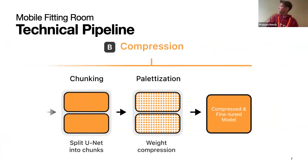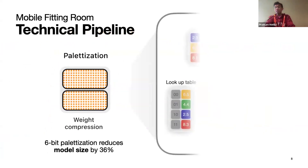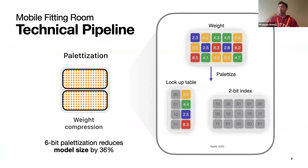So the next step in the pipeline is compression. In an operation called chunking, we split the fine-tuned UNet into two chunks. This increases the chance of cache residency and multi-core utilization on the Apple Neural Engine. We then follow a process called palletization to further compress the weights. Palletization clusters the model weights and creates a lookup table to the cluster centers. The original weight values are replaced with their pointer to the lookup table, which saves size while retaining accuracy.